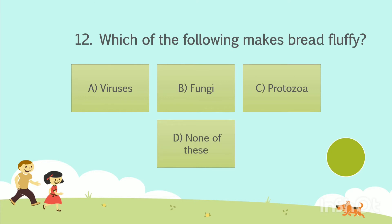Question No. 12. Which of the following makes bread fluffy? Option A: Viruses. Option B: Fungi. Option C: Protozoa. Option D: None of these. Your time starts now. The answer is Option B: Fungi.